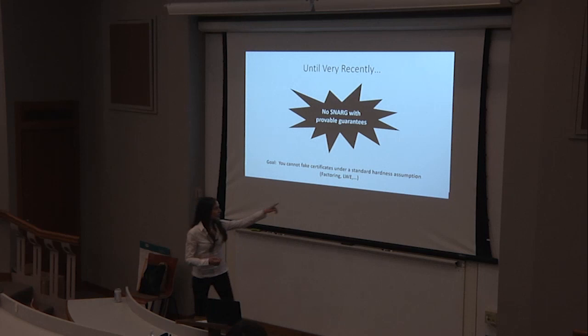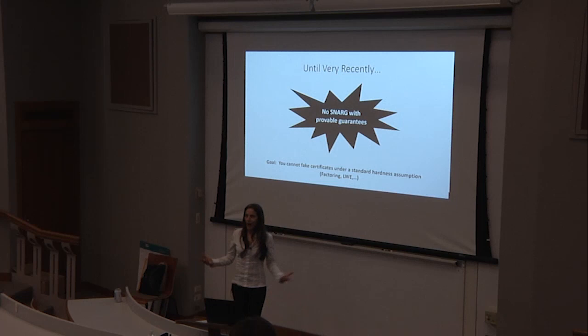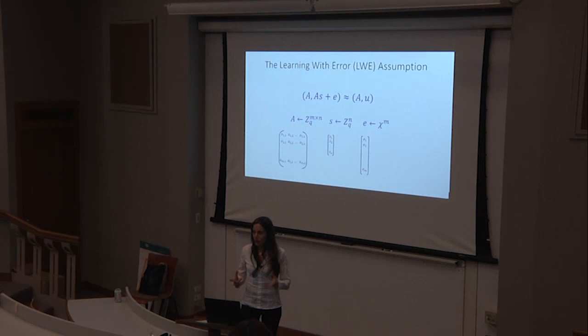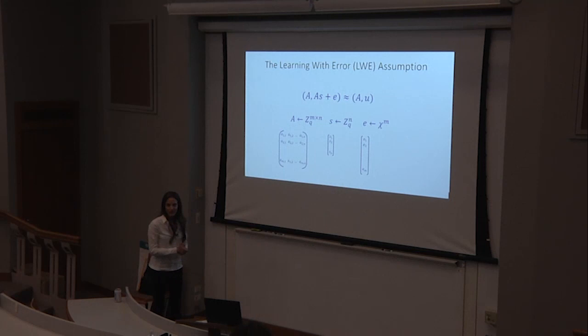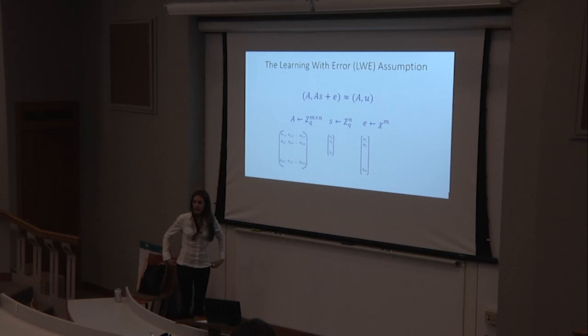The standard assumption I'll focus on is Learning With Errors, called LWE. This is one of our favorite assumptions in cryptography today, partly because it's post-quantum secure. It's a sister of the Learning Parity with Noise assumption. Essentially, it says that if you have many random linear equations over Z_Q evaluated on a random secret S with added noise, the noisy values look random — you cannot distinguish them.